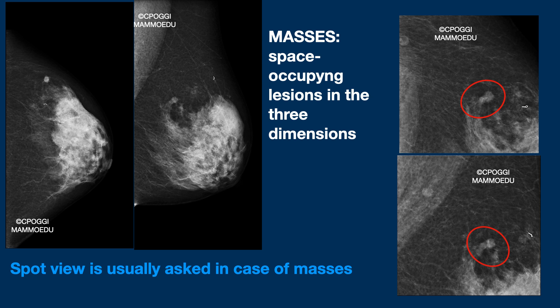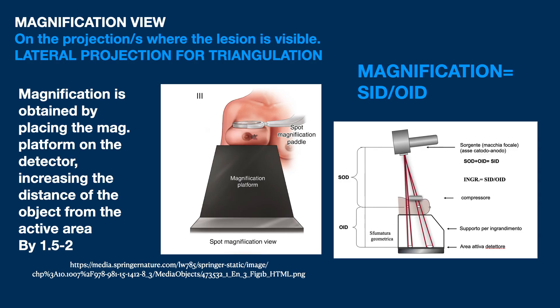The spot view is usually required for masses. Magnification view is performed in the two projections of the standard examination, but preferably in CC and lateral views. The examination must, however, be preceded by the acquisition of the lateral projection for triangulation. The magnification platform is placed directly in front of the detector, which allows the object to be enlarged depending on how far the object is moved away from the active area.